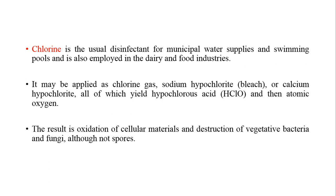Chlorine is also used in dairy and food industries. It may be applied as chlorine gas or in liquid forms such as sodium hypochlorite or calcium hypochlorite solutions. All of these yield hypochlorous acid and then atomic oxygen. Hypochlorous acid is the principal active component of chlorine that kills microorganisms through oxidation of cellular materials, resulting in destruction of vegetative bacteria and enzymes, although not spores.